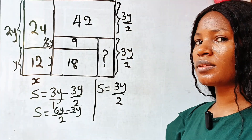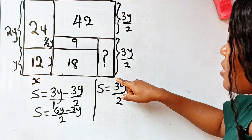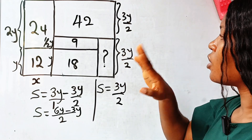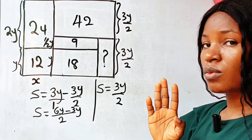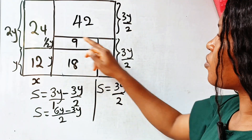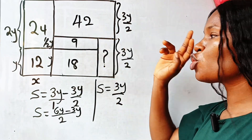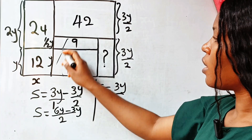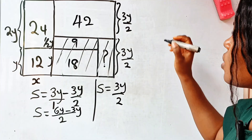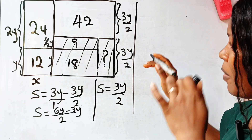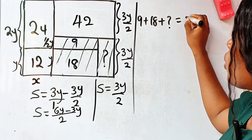Notice that from here to here is equal to from here to here, and from here to here is equal to from here to here. This means the area of this entire side should equal the area of the entire other portion. So we can write that 9 plus 18 plus the unknown should be equal to 42.